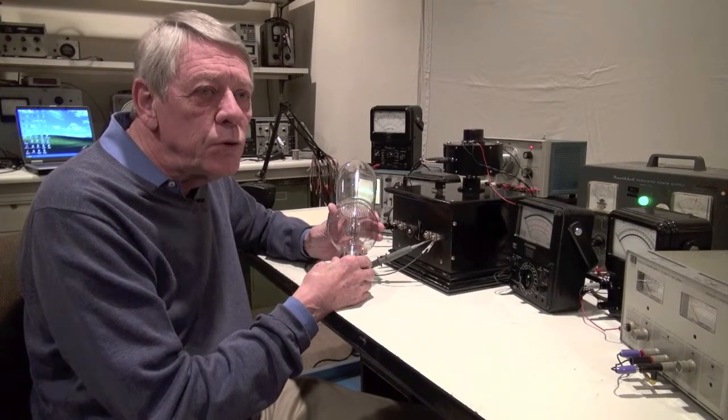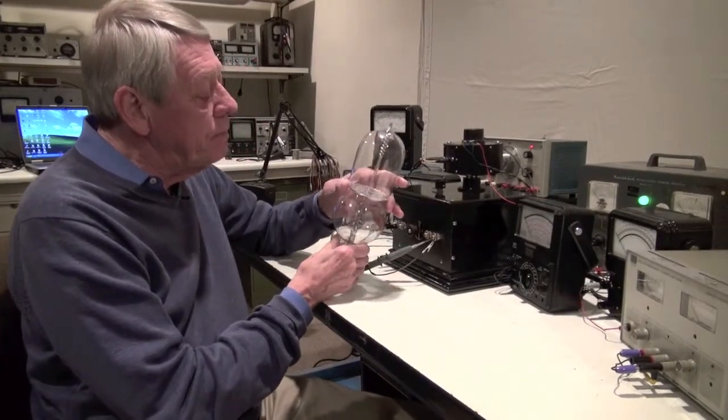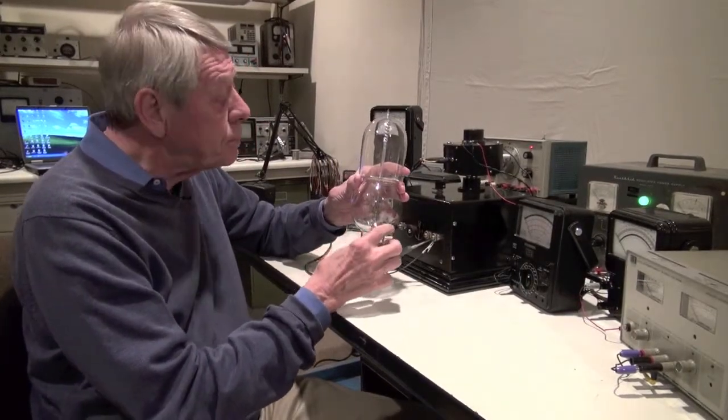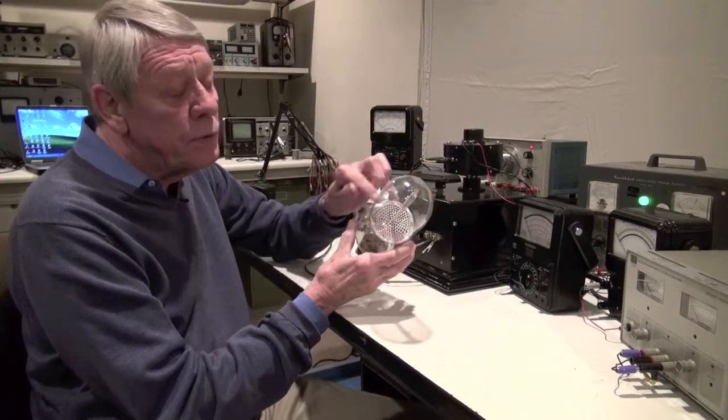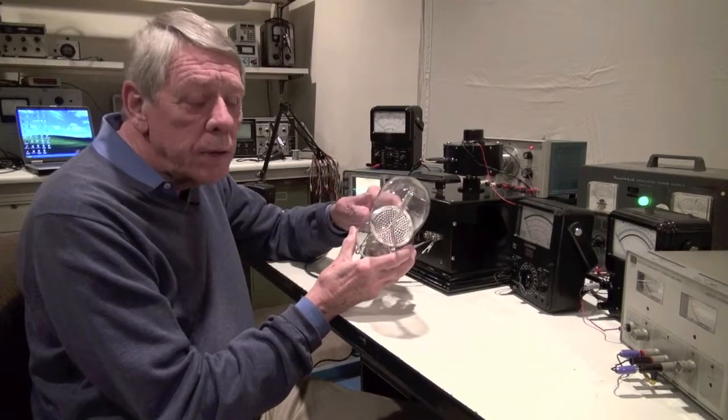But that was an electrostatic tube. This one is like a triode where you have a filament in the bottom, you have a grid, a perforated part here, and then the little spiral anode on the top.